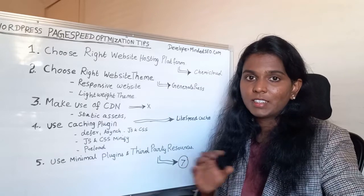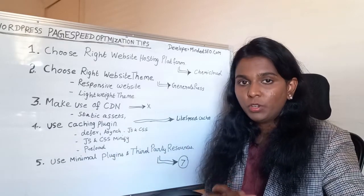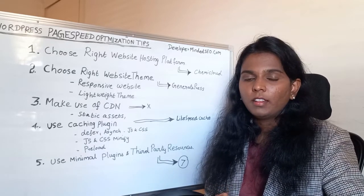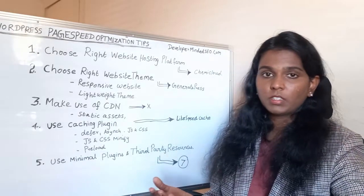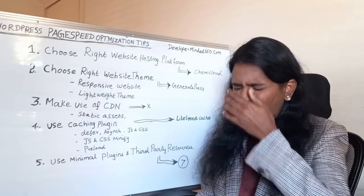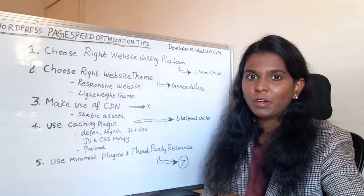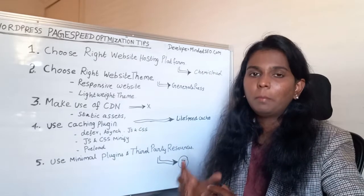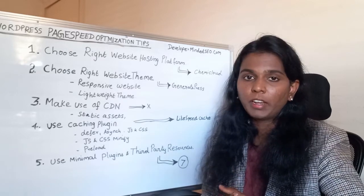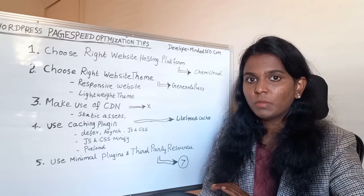Number five: use minimal plugins and third-party resources. As much as possible, use custom code rather than relying on third-party resources — the more custom code you use, the more effective your site will be. In my website I have used only seven plugins. Reduce the impact of third-party resources and use minimal plugins on your website.